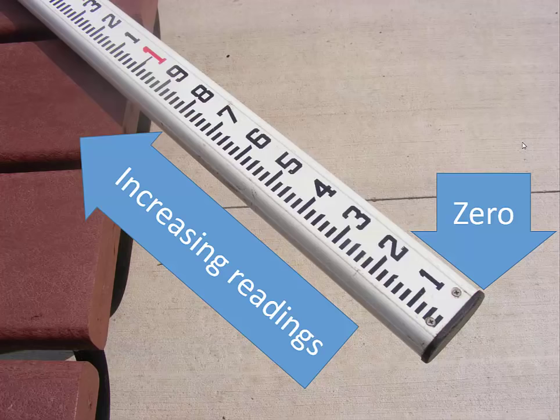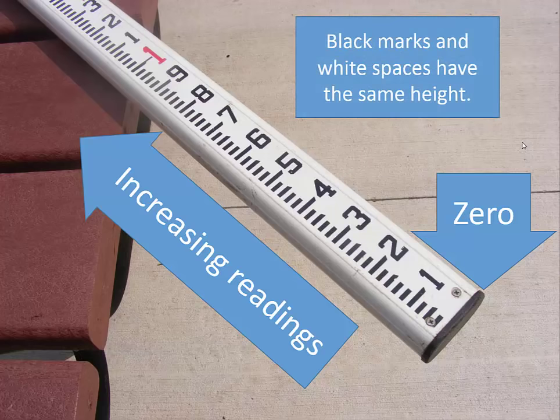Now take a close look at the marks on the rod. Each black mark has the same height as each white space. This is very different from a measuring tape. You see with this system we take our readings at the edges of the marks and spaces. The regular mark heights make it possible for us to read the rod a few hundred feet away.